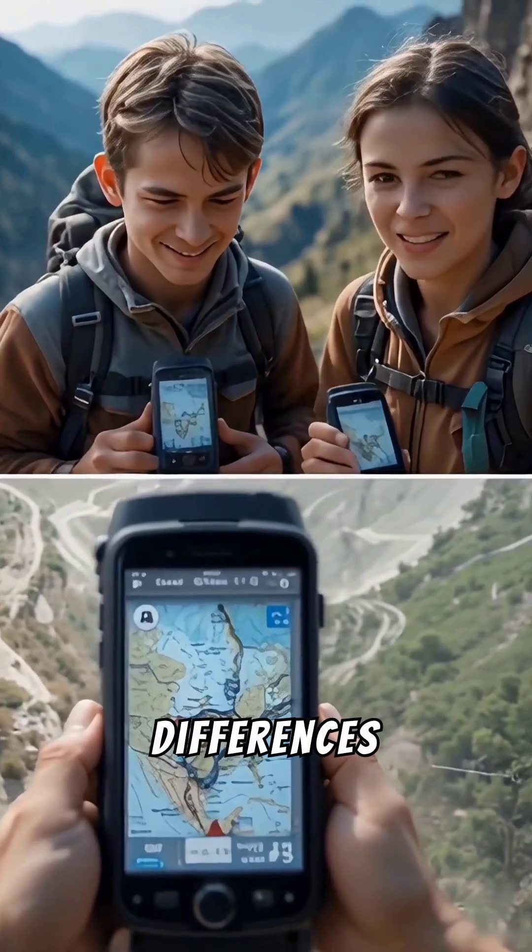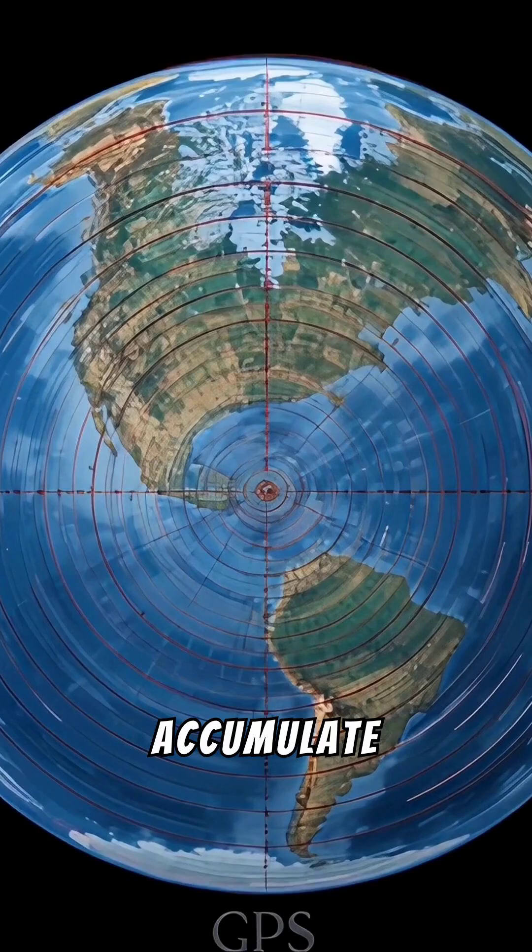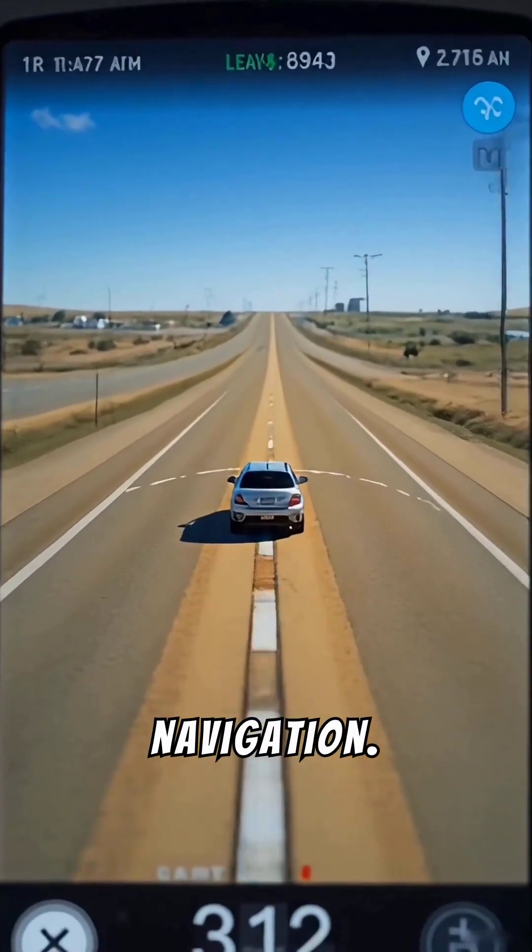If the time differences predicted by relativity were not taken into account, GPS systems would accumulate errors of several meters per day, rendering them useless for precise navigation.